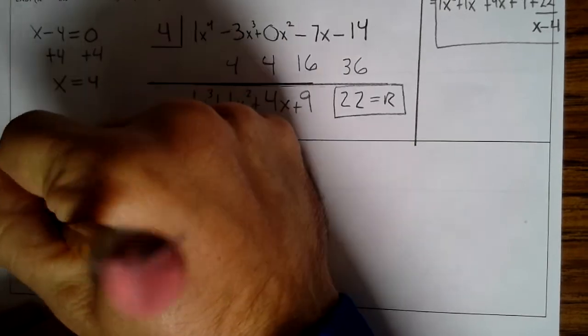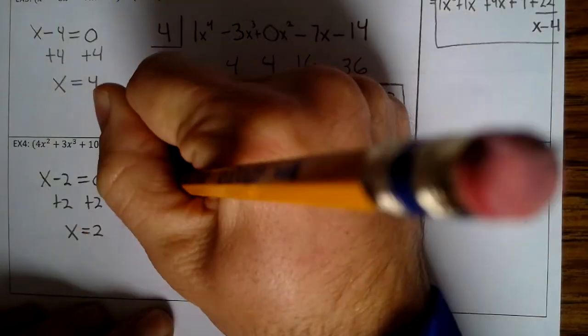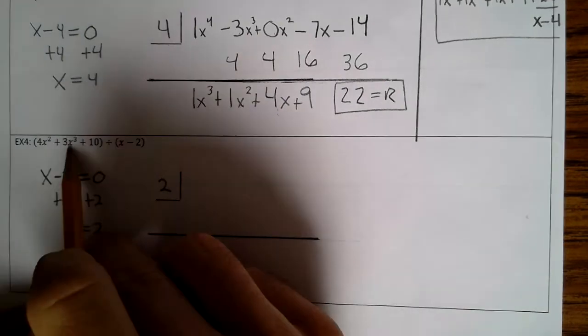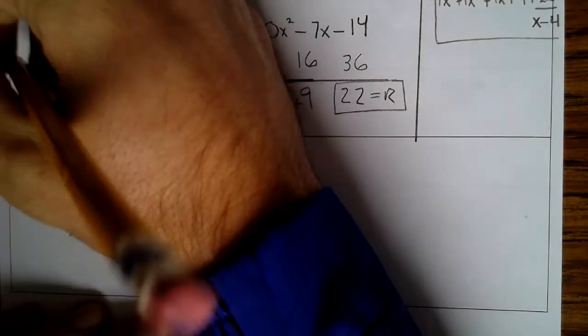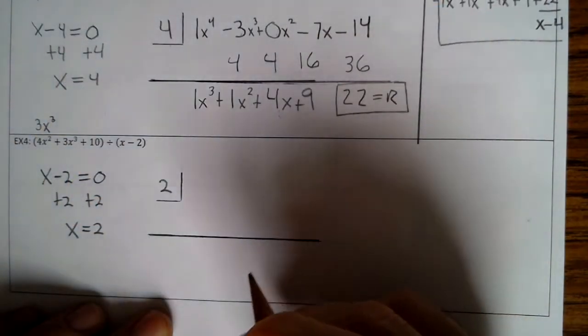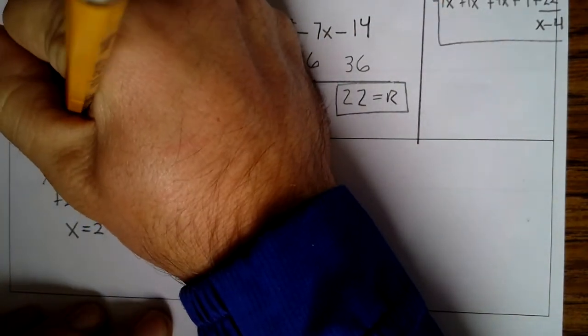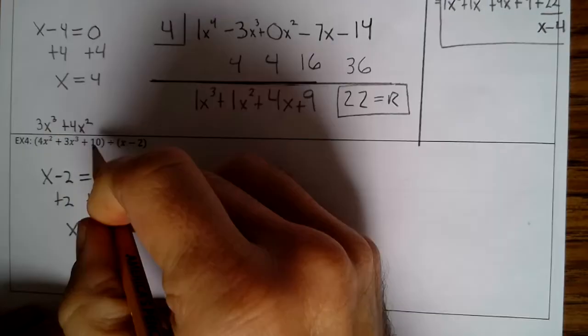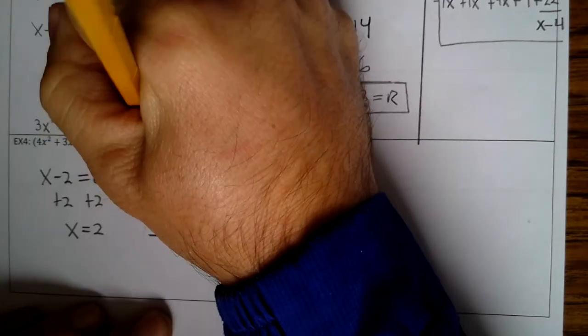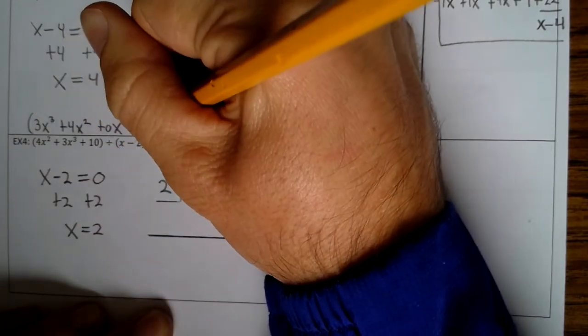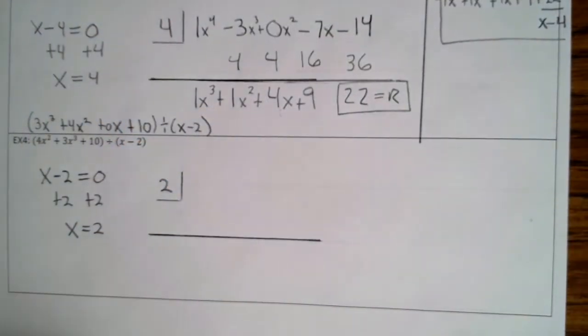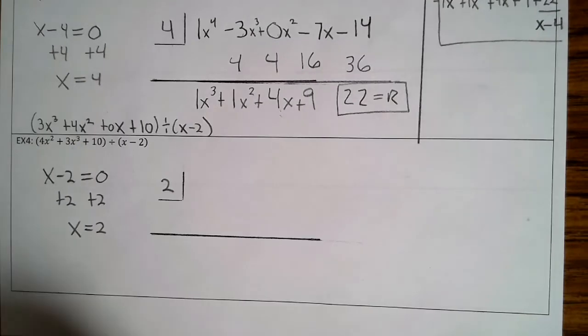Now we take the coefficients. Now here, this needs to be rewritten because it needs to be the highest exponent first. So we need to rewrite it as 3x³ + 4x². Oh, there's no x. So + 0x + 10 divided by x - 2. So now the coefficients are 3, 4, 0, 10.